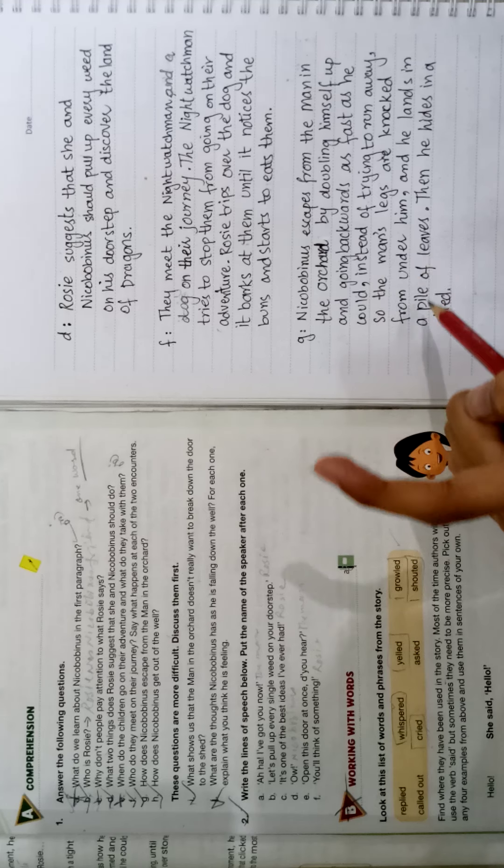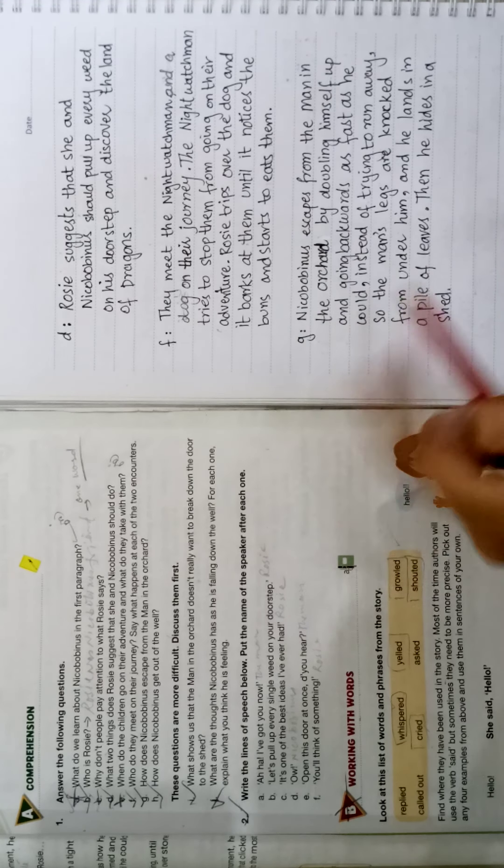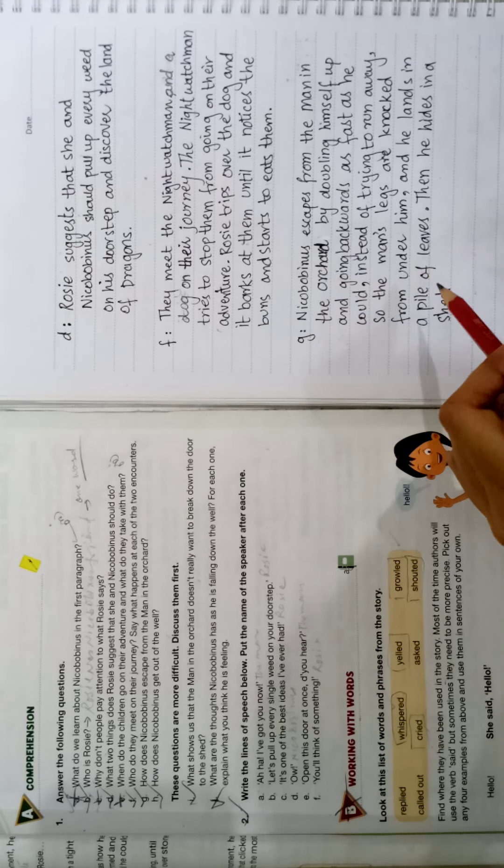What is Nicobobinus doing is that he doubles his back and he rolls backwards and doesn't run away. Next, how does Nicobobinus get out of the well? He scrims through a long narrow passage made of stone. There was a very long passage made of stone and he got out of stone.